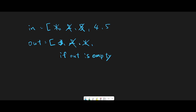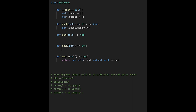Once output is empty, we call pop again — then four and five go into output as five, four, and we remove four and return four. Now only five remains in output. If we peek, we get five; if we pop, we remove five and return five. Looks good.